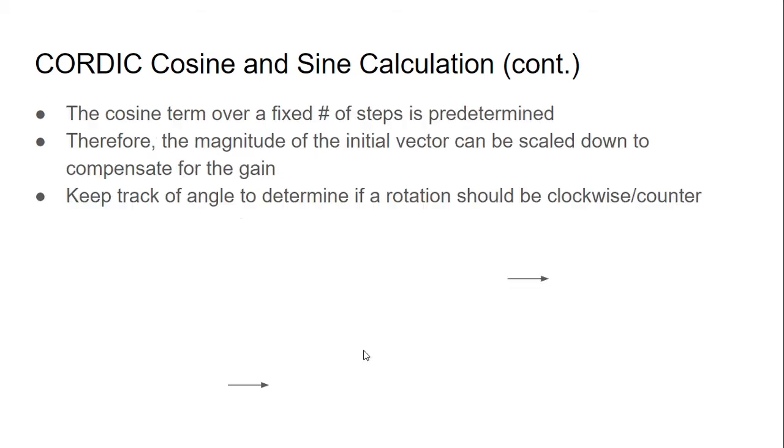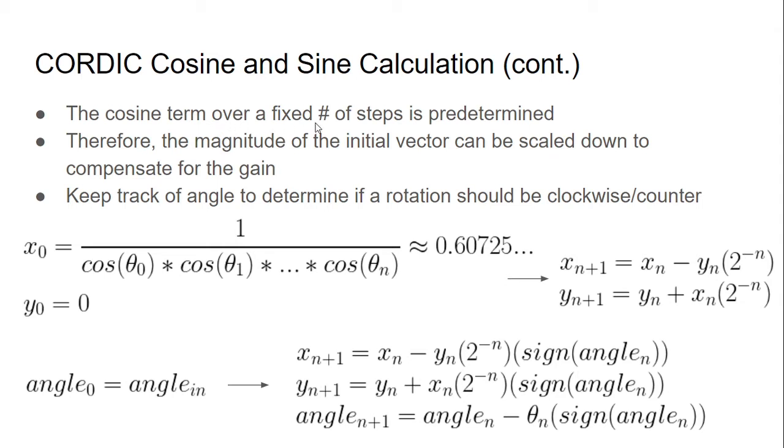So what we have here is now just a cosine of theta multiply here. So now how do we get rid of the cosine of theta? So the cosine term, actually over a fixed number of steps in the algorithm, it's predetermined. So if it's predetermined, then what we can do is we can initialize the magnitude of the initial vector so that we can compensate for the gain. So remember that we started out with the unit i-direction vector of x naught equals to one. But what if we make it slightly smaller to compensate for that gain? So what we can do is we can multiply it by one over cosine of theta naught cosine of theta one up until cosine of theta n. So that way we can neutralize all of those aggregating multiplying cosines.